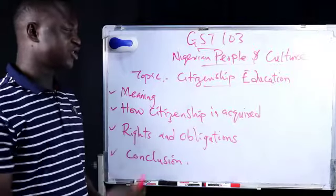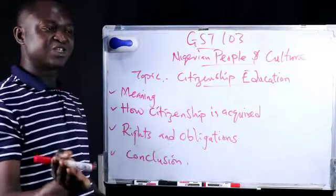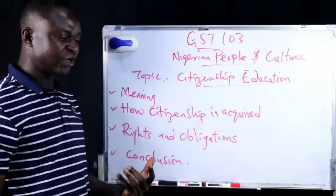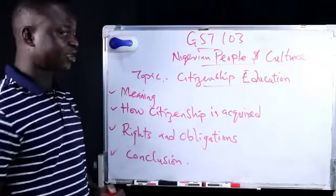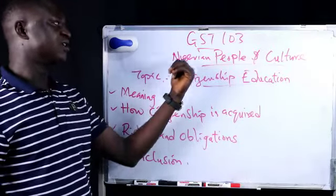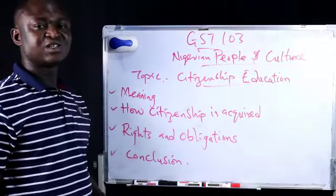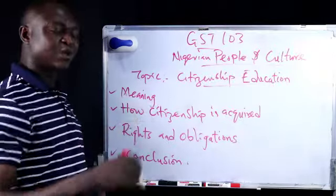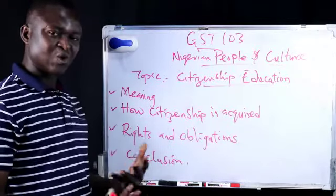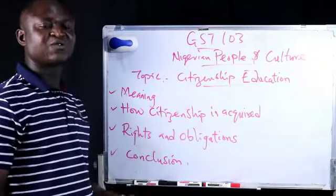We will be looking at citizenship education. In our previous classes, we went through the people in the north and south of Nigeria. We've looked at amalgamation, colonialism, and in the process of knowing who Nigerian people are and their culture, we looked at the cultural areas of Nigeria that define the way of life of the people. We've also looked at culture shock and how different generations of Nigerians have transmitted their values.